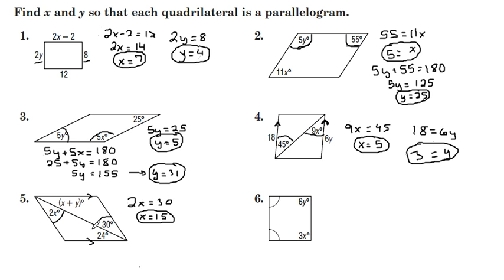And then the x plus y angle and the 24 angle. Those should be congruent. x plus y equals 24. We have two variables here. But I already know one of them. 15 is for x. So we'll have 15 plus y equals 24. We'll subtract both sides by 15. Y then is 9.